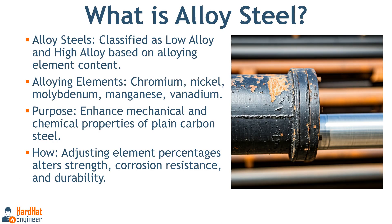What is alloy steel? Low alloy steel and high alloy steel are classifications of alloy steels based on the amount of alloying elements present. When specific amounts of metallic and non-metallic elements are added to carbon steel, its properties are significantly altered. By adjusting the percentages of these alloying elements, we can enhance the characteristics of steel beyond those of plain carbon steel.